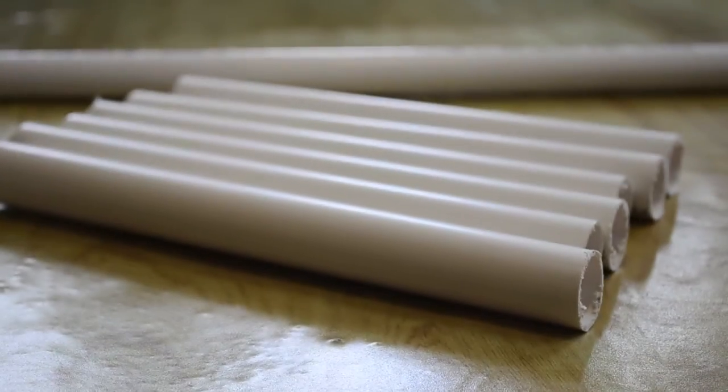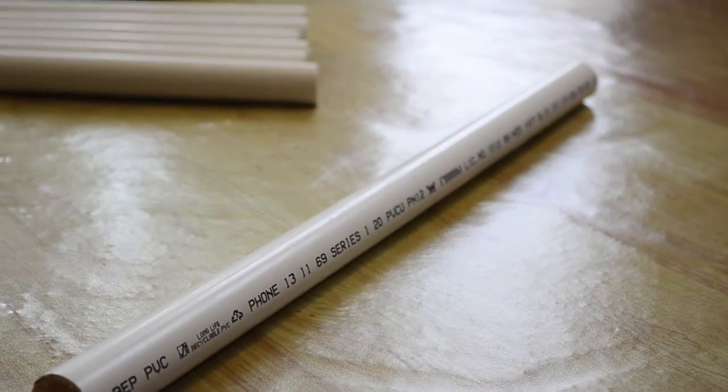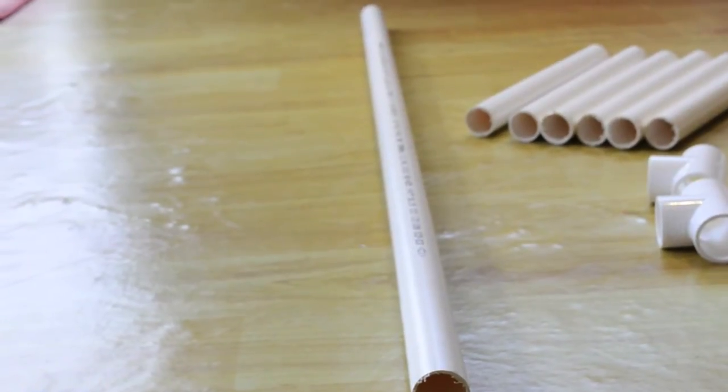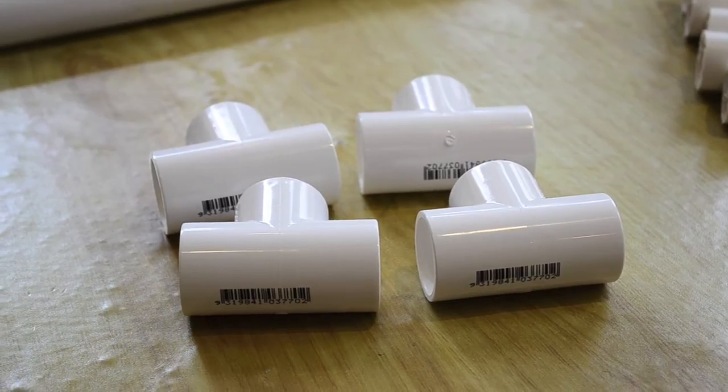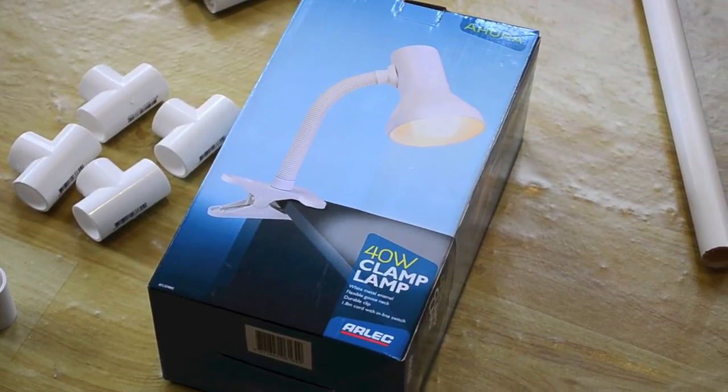You'll need 6 25cm PVC pipes, 1.5m PVC pipe and 1.1m PVC pipe, as well as 4 T-joints, a coupling and a clamp light of your choice.